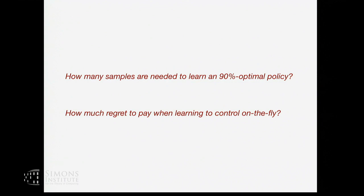What are the basic theoretical questions in RL? Analogous to supervised machine learning, the first question is: how many data points do I need? In reinforcement learning, if I want to get a good policy — maybe 90% or 50% efficient — how many samples are needed, and how do we use them efficiently? A related and potentially harder problem is: if we want to learn to control a process on the fly, how much regret do we have to pay?